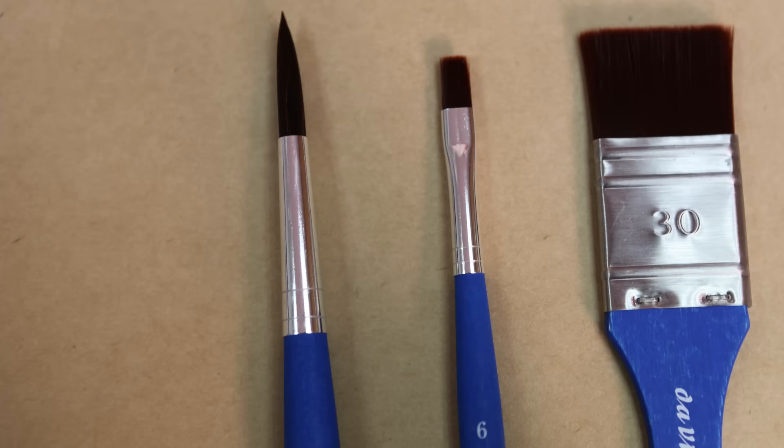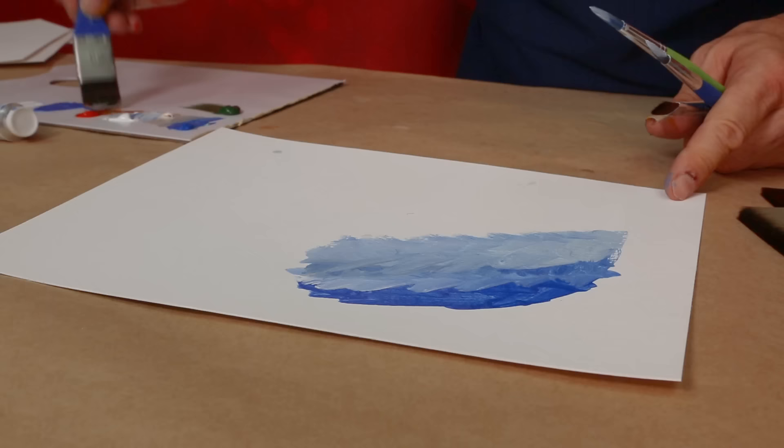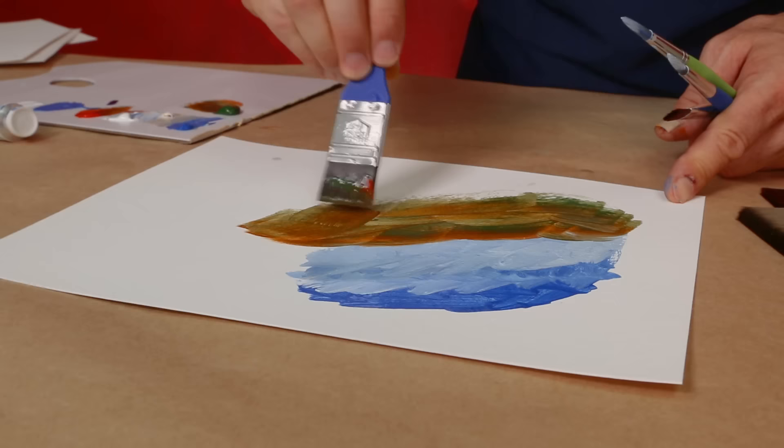They come in the round, the flat, and what's called a Mottler, a wide flat brush, which is great for wide area painting and broad applications of colour.